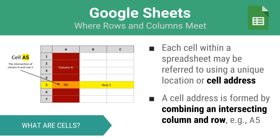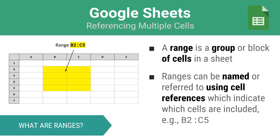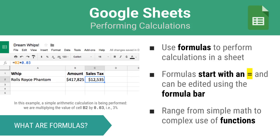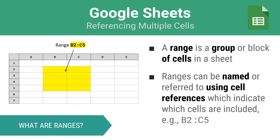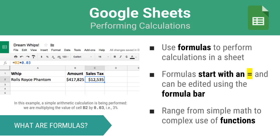In a spreadsheet, you will often be working with groups of cells, called ranges. Ranges are referenced using a similar scheme. For example, the range depicted here would be referred to as B5:C5, where B5 indicates the beginning of the range and C5 indicates the end of the range. Once you have entered the raw data into a spreadsheet, you can manipulate it in a variety of ways. Perhaps the most useful thing you can do in a spreadsheet is to apply formulas that perform calculations on data.